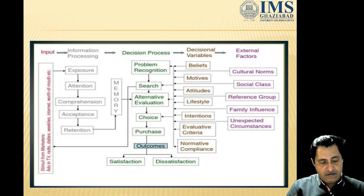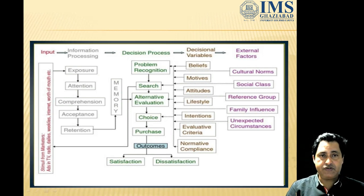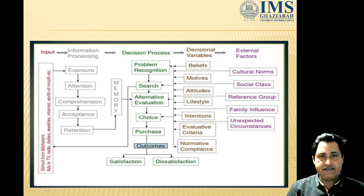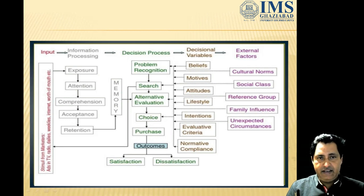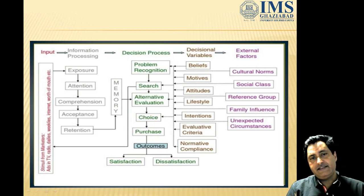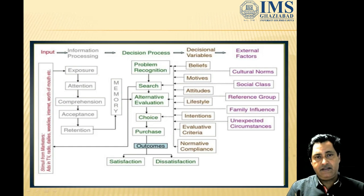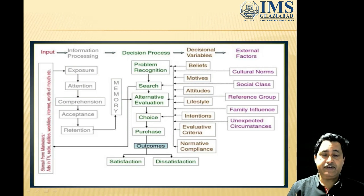This model is all about the decision-making process — how a consumer makes decisions, what the interrelationships are among all the stages of the decision-making process, and what variables play a very important role. The decision-making process is the central point, and everything moves around it. We will start with the input, then information processing, then the decision-making process, and finally decision variables and external factors which play a very important role in changing buying behavior.